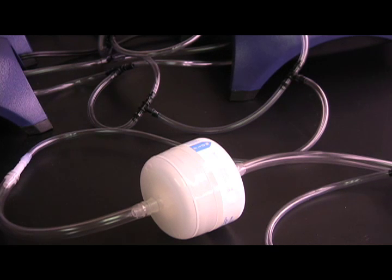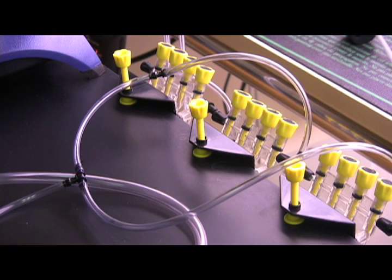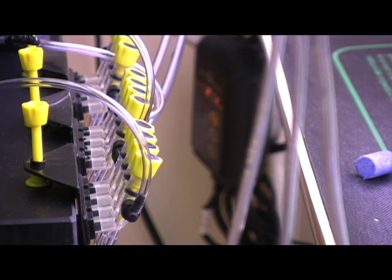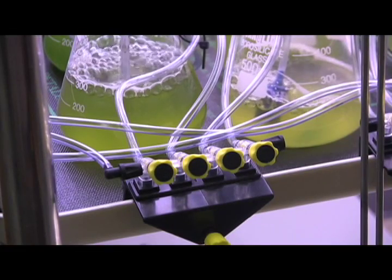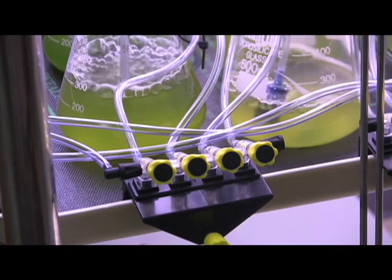From the filter, airline tubing was split twice to run into three gang valves. The gang valves further split the tubing by a factor of four, each of which ran into another gang valve. From these gang valves, airline ran directly into our systems.